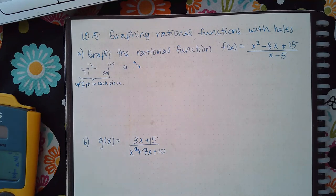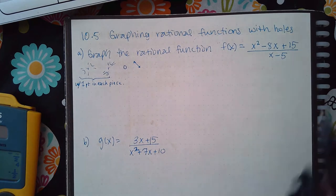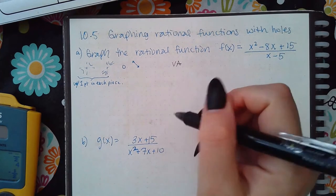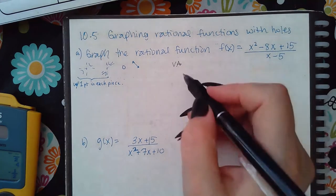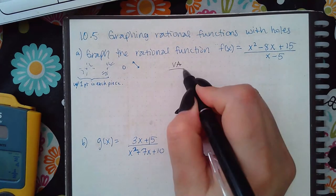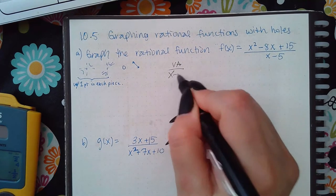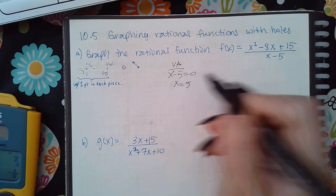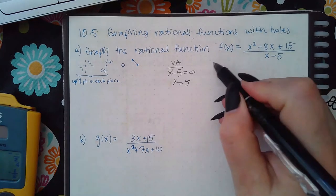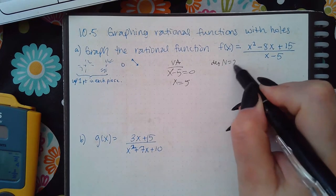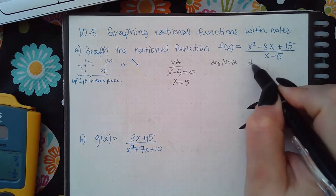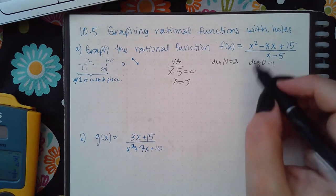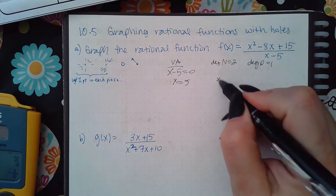First I need to figure out what the vertical asymptote is — that is where the denominator equals zero. Since the degree of the numerator is two and the degree of the denominator is one, the numerator is bigger by one, so I have to do long division.